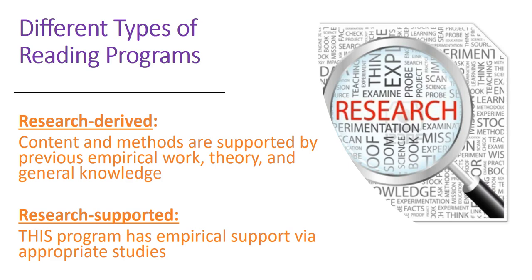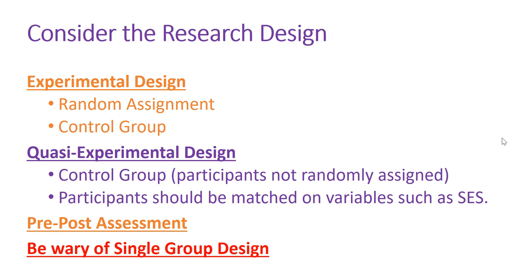When you find research support in a program, you want to think about a couple of things. First, consider the research design. Was it an experimental design, which would mean you'd find information about random assignment of students and a control group? One group received the intervention and the other didn't, or one group received the intervention and another received a different kind of instruction — so there are two different groups to compare.